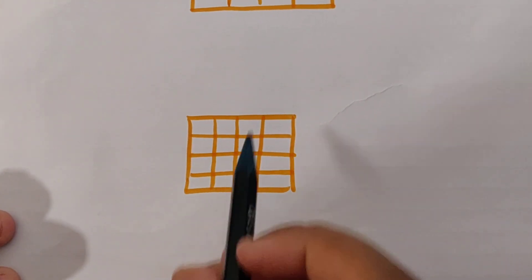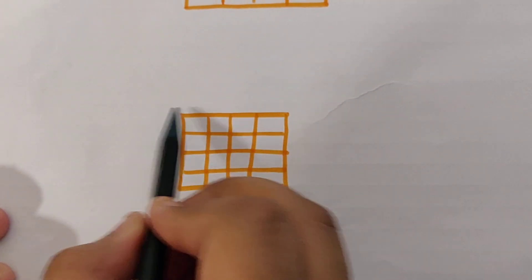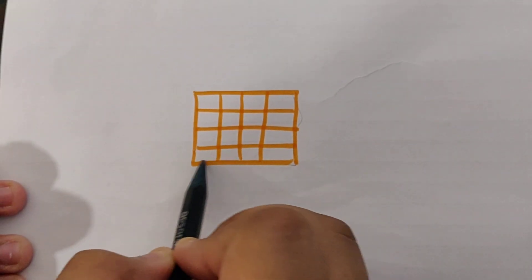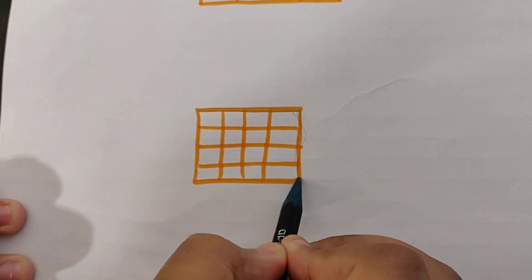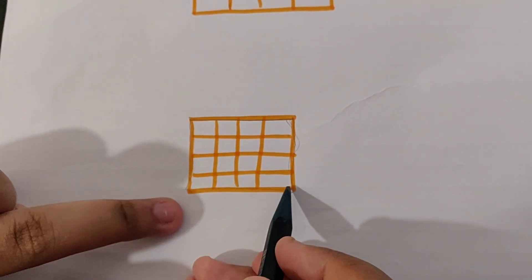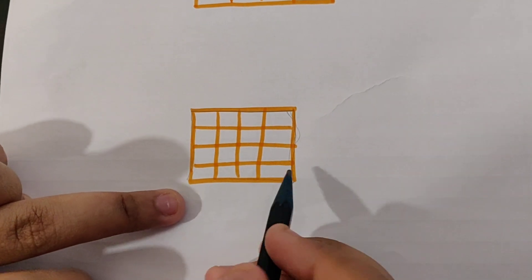As we saw in the first video, perimeter means the distance around a shape, the distance around the shape. Now if we see, this is a row column table, a grid.